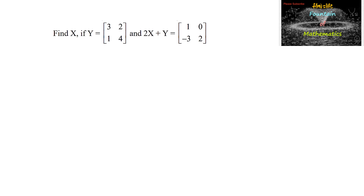Find matrix X if Y is equal to matrix [3, 2, 1, 4], a 2×2 matrix, such that 2X plus Y is equal to [1, 0, -3, 2]. Since Y is a 2×2 matrix and the result 2X plus Y is equal to a 2×2 matrix, we can say that matrix X also must be a 2×2 matrix.